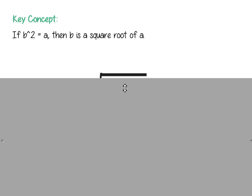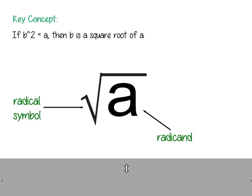We want to know the different parts of a square root. It usually has a variable or a number underneath what's called the radical symbol — that weird check-mark-looking symbol. The number or variable underneath is called the radicand.